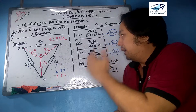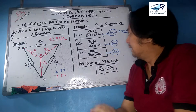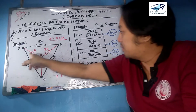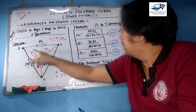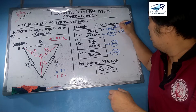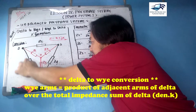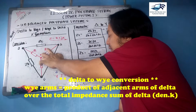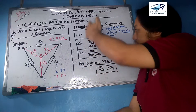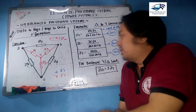To get Z1, multiply the adjacent arms of Z1 in the delta, which are Zb and Zc, then divide by Den K. For Z2, the adjacent arms are Za and Zc. For Z3, the adjacent arms are Za and Zb. In summary: each Y impedance equals the product of its adjacent delta arms divided by the denominator constant Den K.